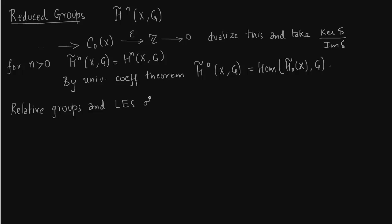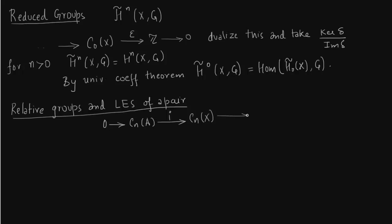Now we talk about relative groups and the long exact sequence of a pair. First recall what we had in homology: we had the inclusion map with space A contained within space X, and we formed the chain complex of the pair. Since we are now in cohomology, we have to dualize what we have written. The beauty of the argument is that even after you dualize it, the sequence is still exact — the details can be found in Hatcher.